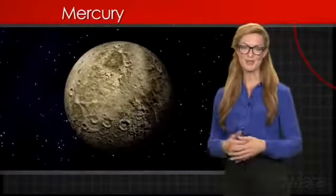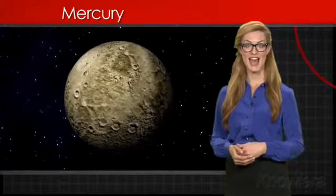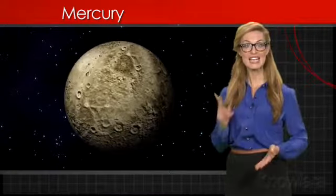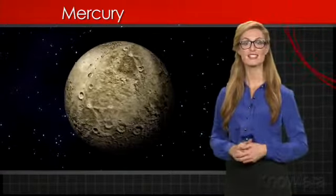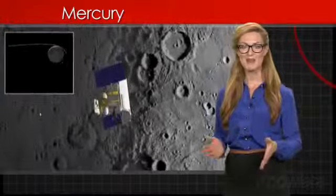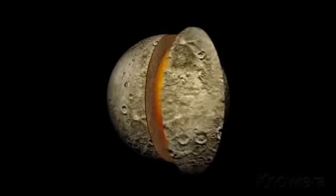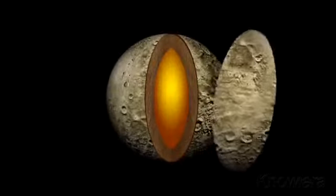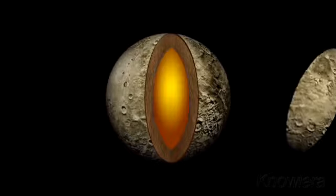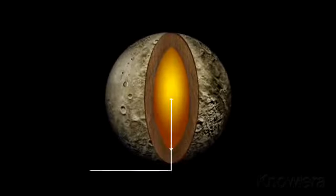Like the other inner planets, Mercury is dense and rocky. In fact, it's the second densest planet next to the Earth. NASA's Messenger spacecraft revealed that Mercury has a large core, occupying nearly 85 percent of the planet's radius.